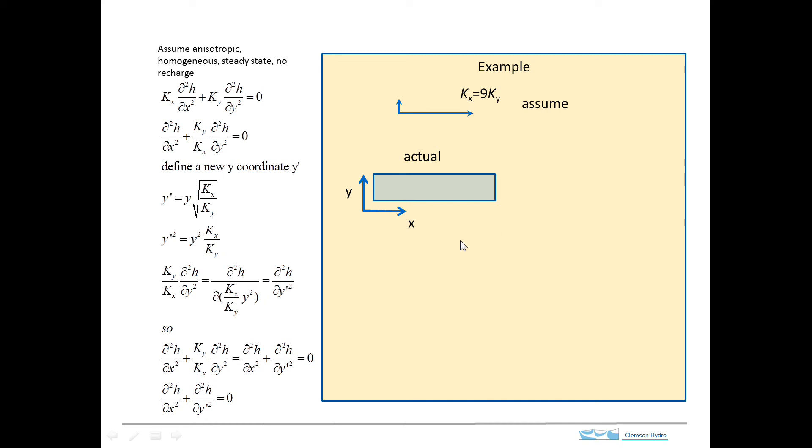So what that means is that we take our problem region here, and if we wanted to plot that in this new coordinate system, y prime as a function of x, it would simply be this region stretched vertically by a factor of 3. So that's what's happening here. And so now what we do is we have a situation here that's anisotropic, but when we stretch it, it's now isotropic.